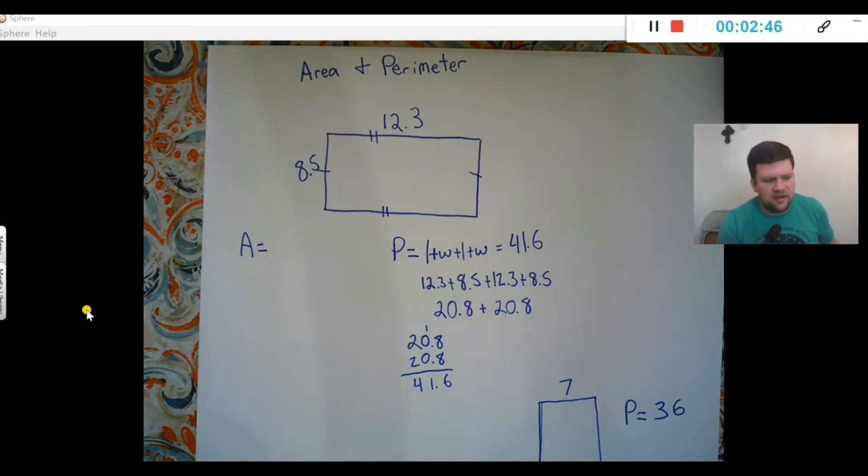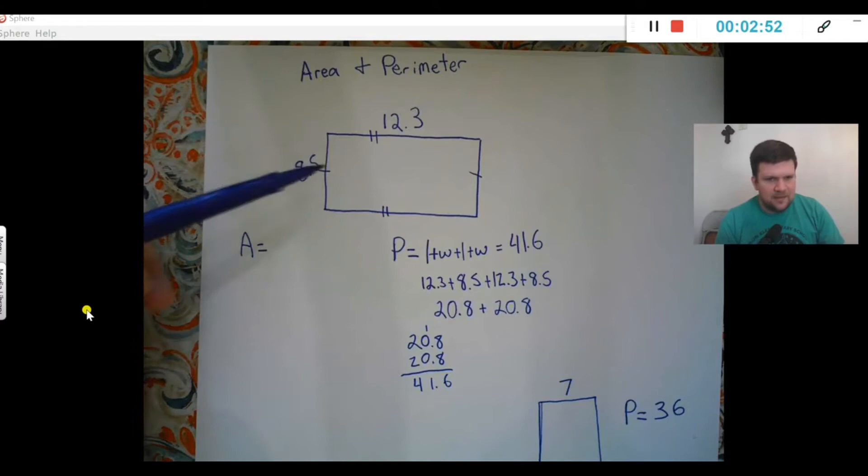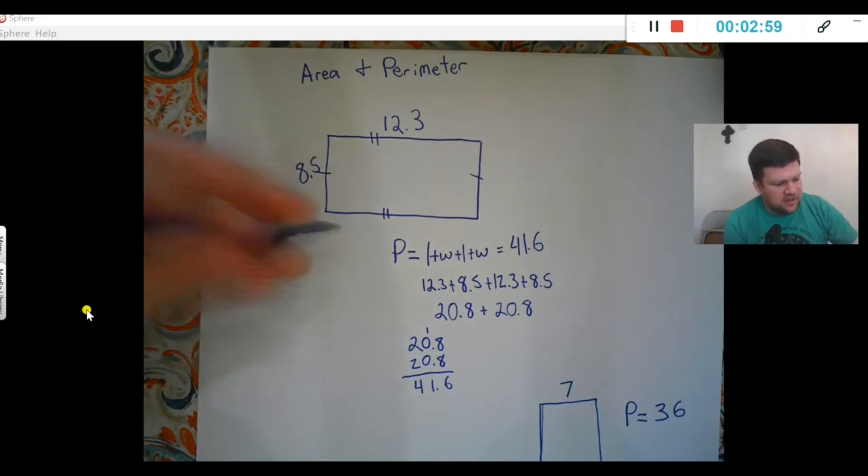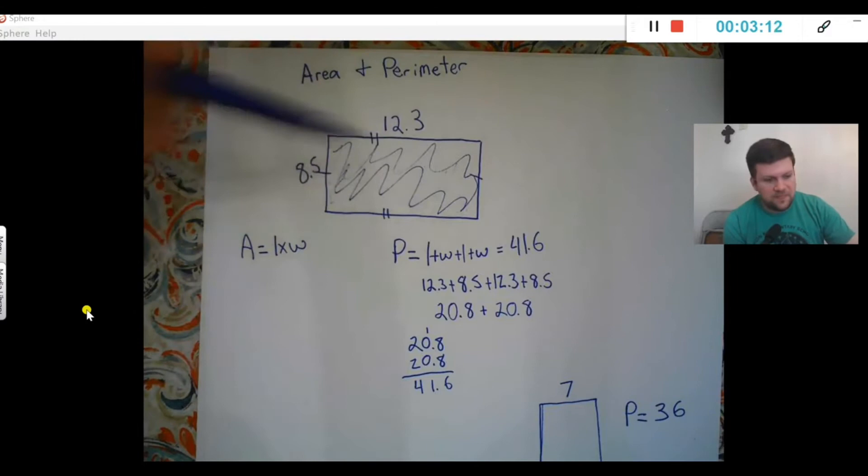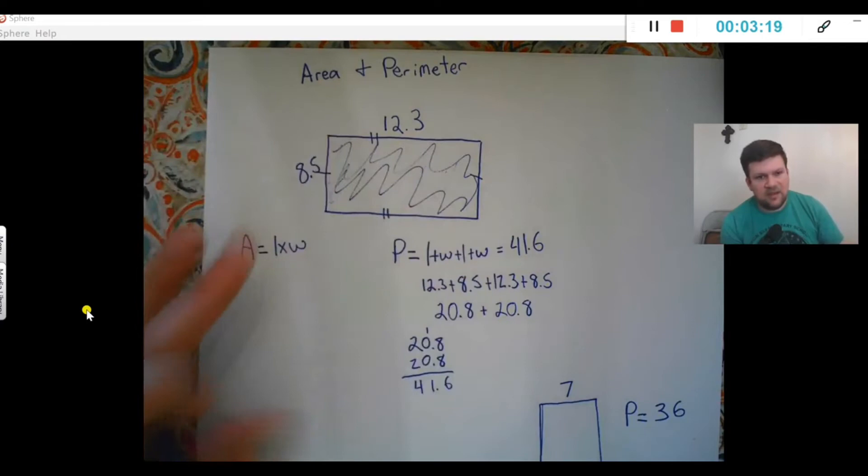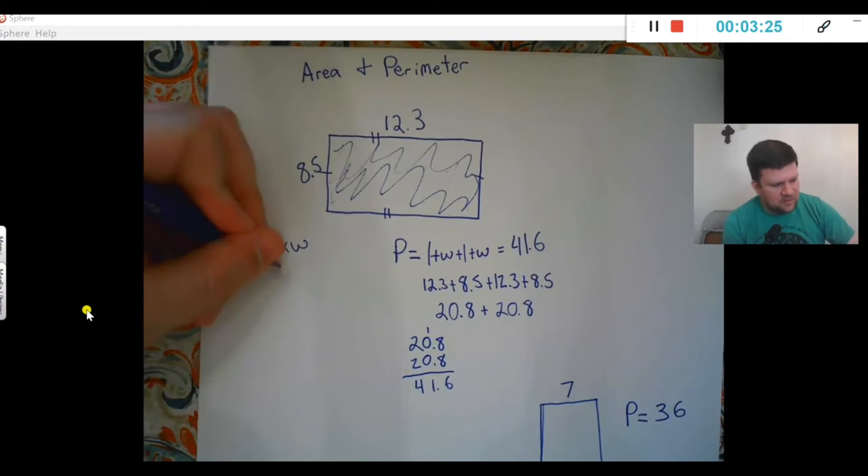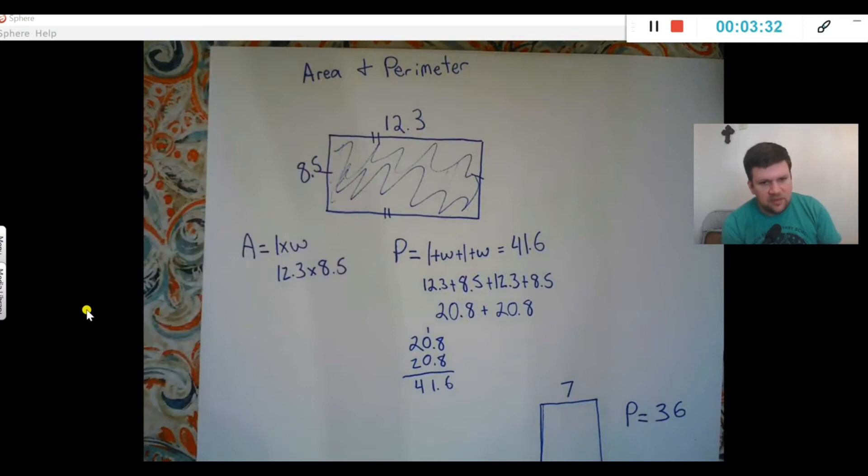Next I want to look at the area. When you're figuring out the area, what is the formula for the area of a rectangle? Hopefully you said length times width, or width times length—multiplying the two numbers together. Length times width tells us what it would take to cover this. If I was going to cover this shape completely or fill up the inside of a flat shape, cover something with carpet, anything like that, that's going to be area. For this, I'm just going to multiply them together: 12.3 times 8.5.